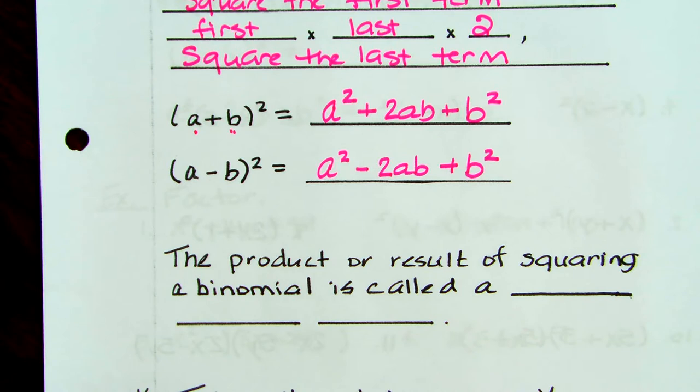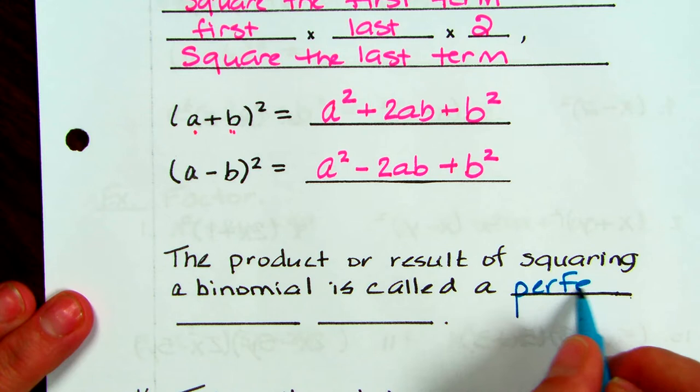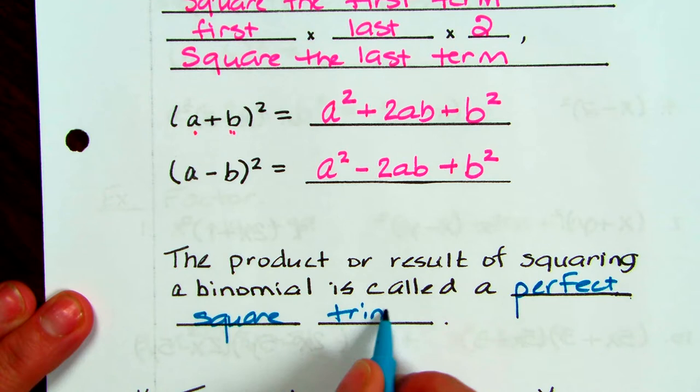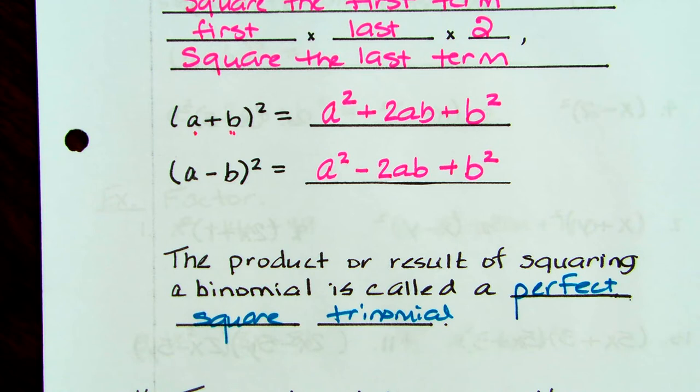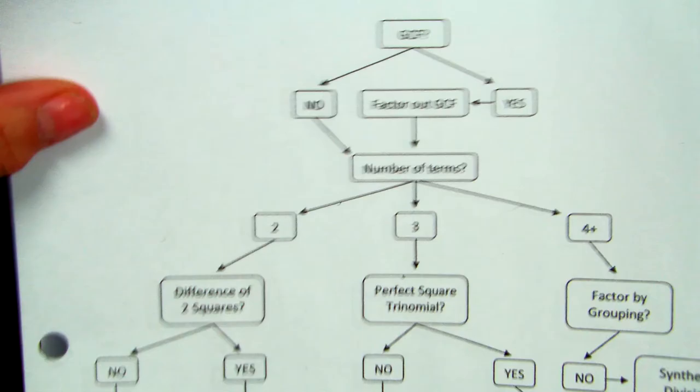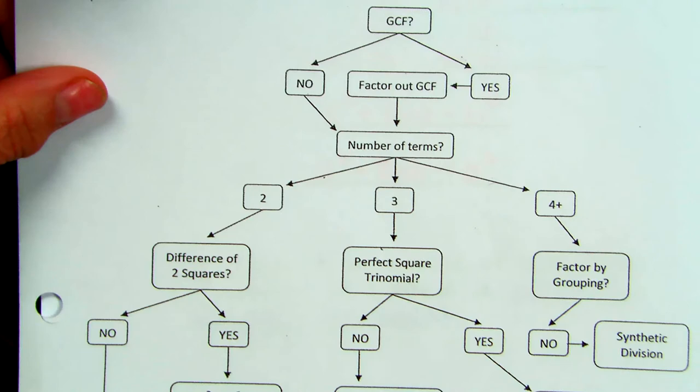All of these are called a perfect square trinomial — they all have a positive last term. The result from squaring a binomial is called a perfect square trinomial. We're going to focus on factoring once we learn how to multiply. This pattern takes a little more time to learn — it's a little trickier. But once you learn to multiply it, it will help you recognize a perfect square trinomial that you can factor back.